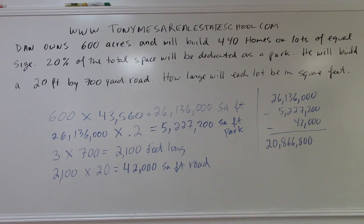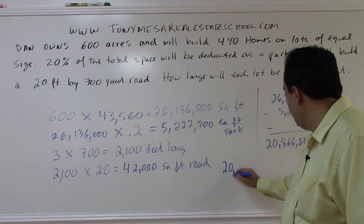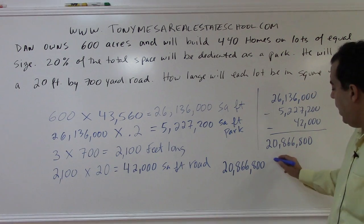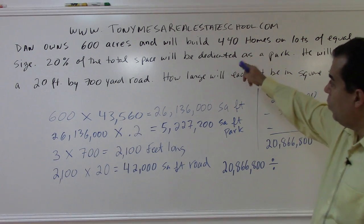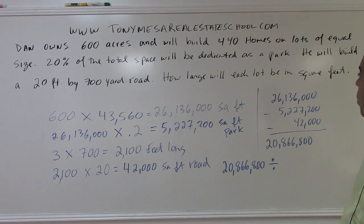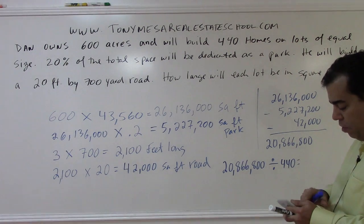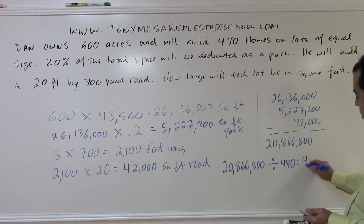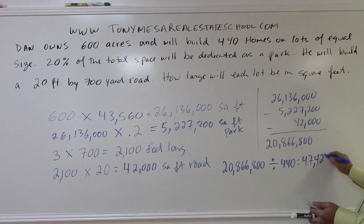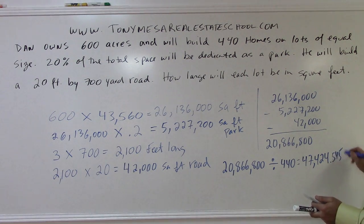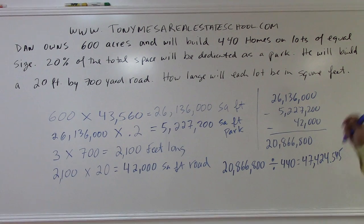The last step: take the usable square footage of 20,866,800 square feet and divide by 440, because we're building 440 homes on lots of equal size. That gives us approximately 47,424.55 square feet per lot. That is the size of each lot.